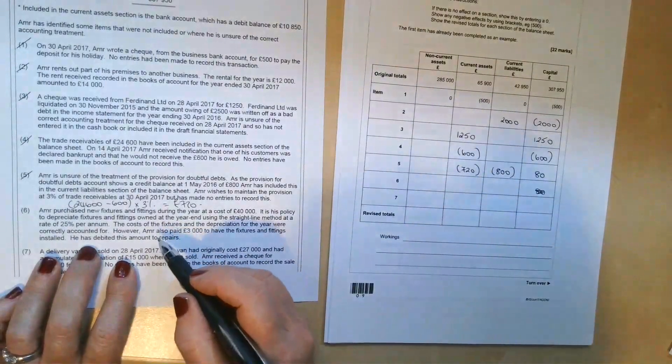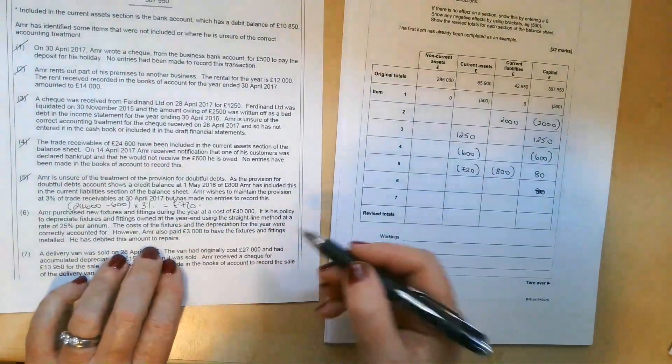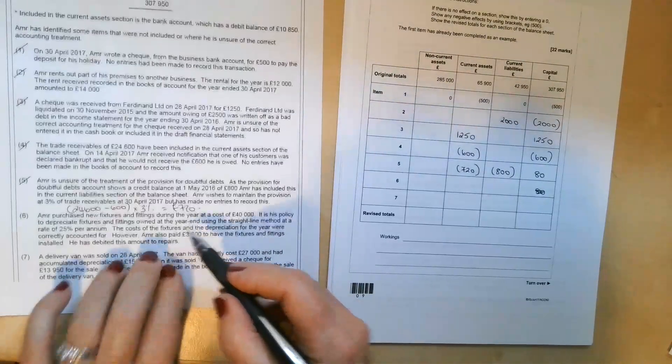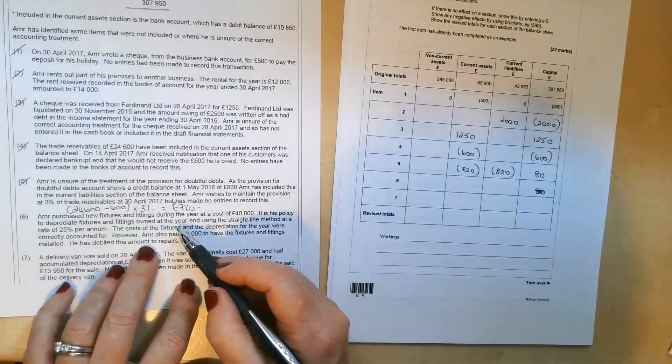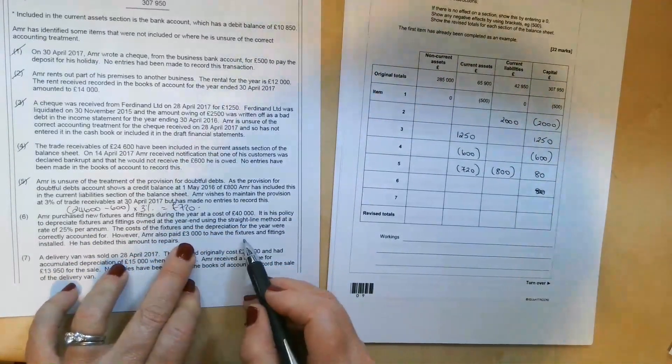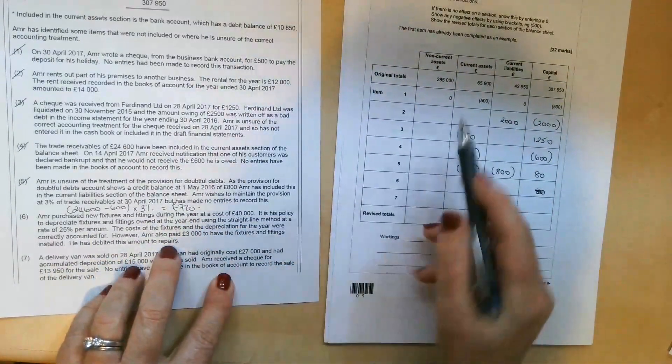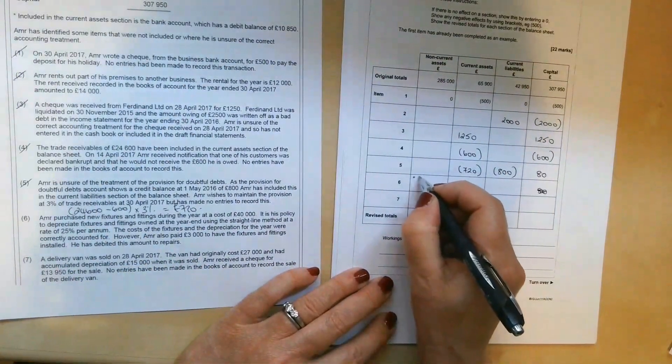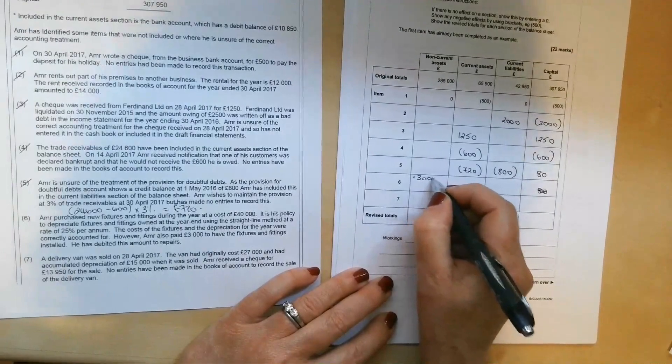If you remember, when we're looking at the cost of an asset, any costs in getting it into a position and a state to be able to be used is included as part of the capital cost and needs to be added to non-current assets. So we're going to be taking that £3,000 out of repairs. It shouldn't be there. It should be treated as a non-current asset. So we're going to add £3,000 to non-current assets.